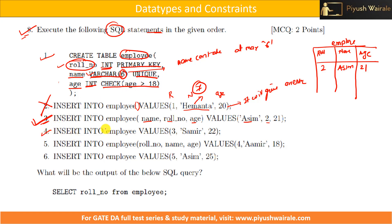The next insert is: values 3, 'samir', 22 — with no column order specified, so it takes the default order. Role number 3 is not already in the table, so I can insert it. 'Samir' has five characters, which is less than six, so it satisfies the data type. Age 22 satisfies the check constraint. So I can insert this record as well.